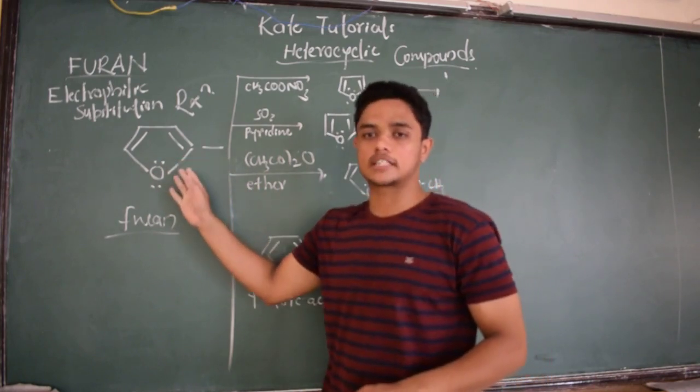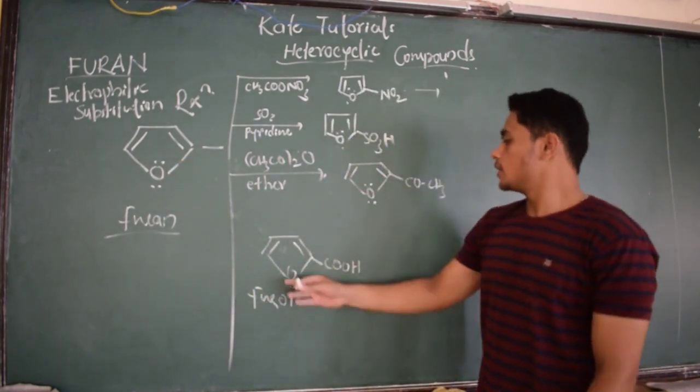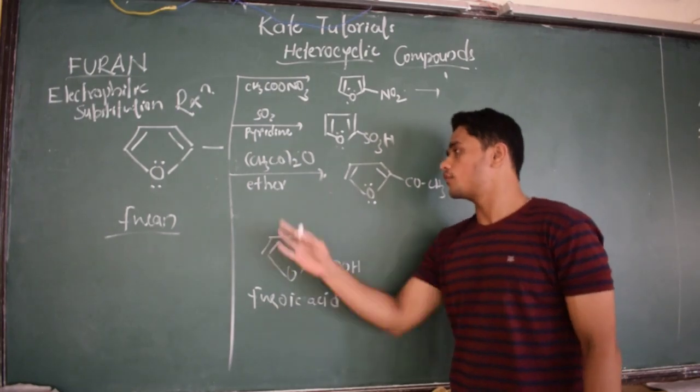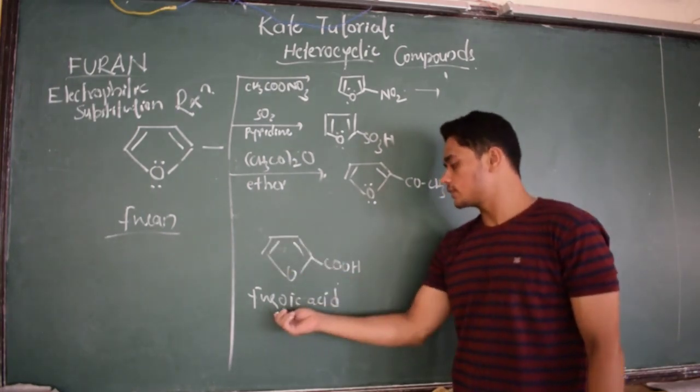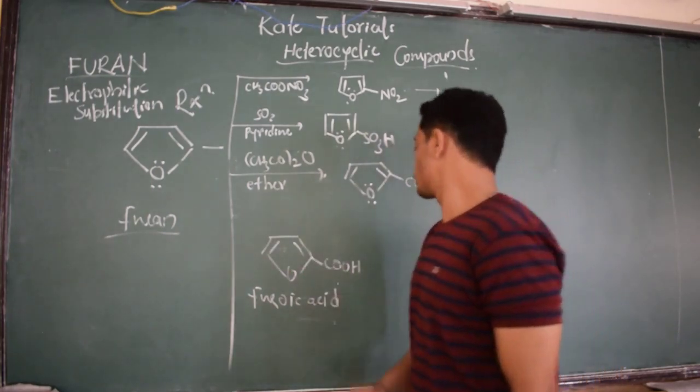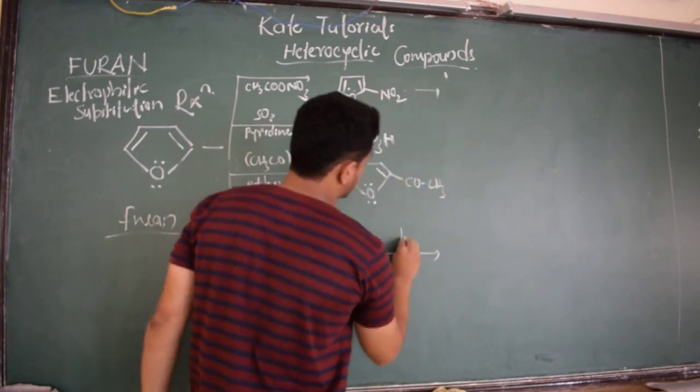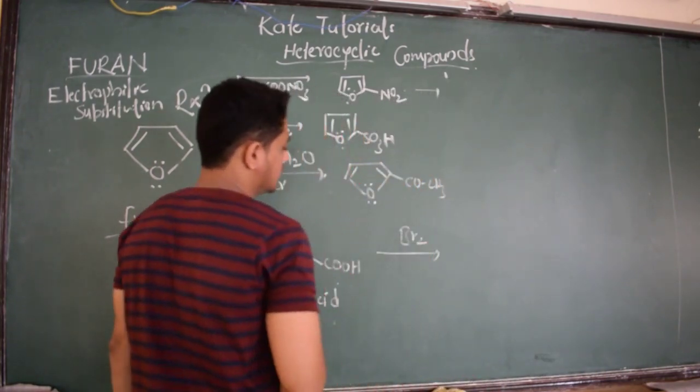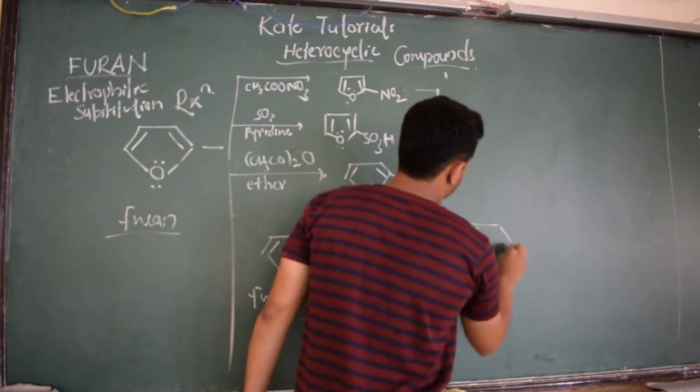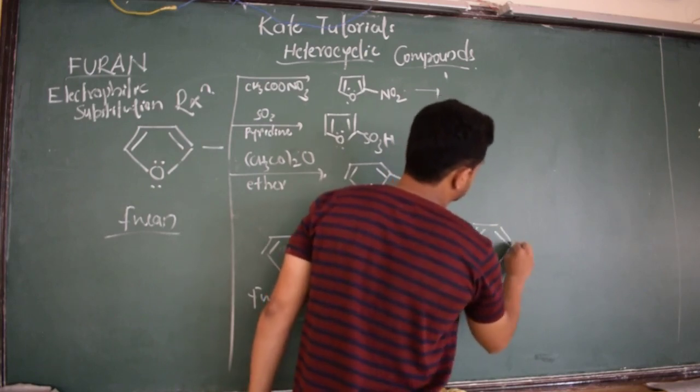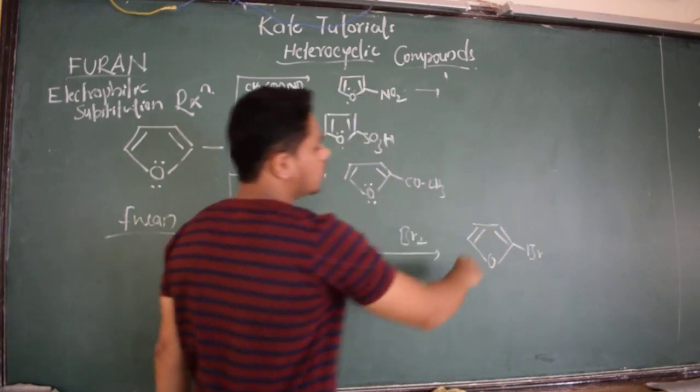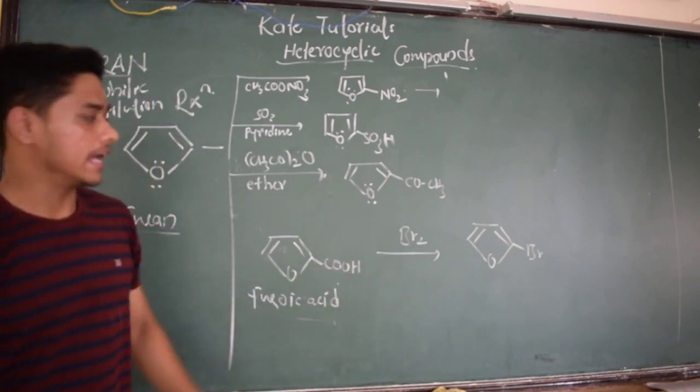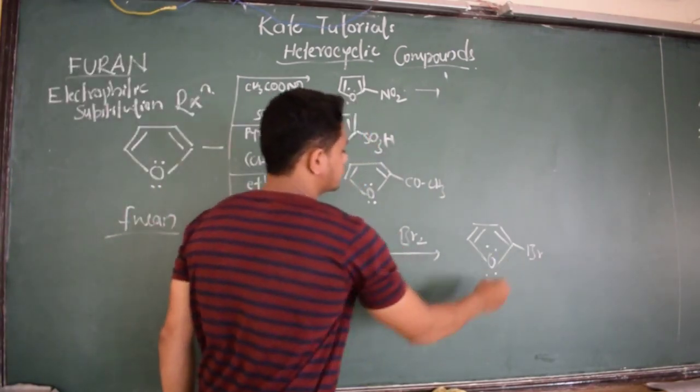So what we do is we prepare furanoic acid. To that furanoic acid we are going to do halogenation. If we do halogenation, we are going to get compounds like 2-bromofuran - that is halogenation. But how to prepare this compound, furanoic acid?